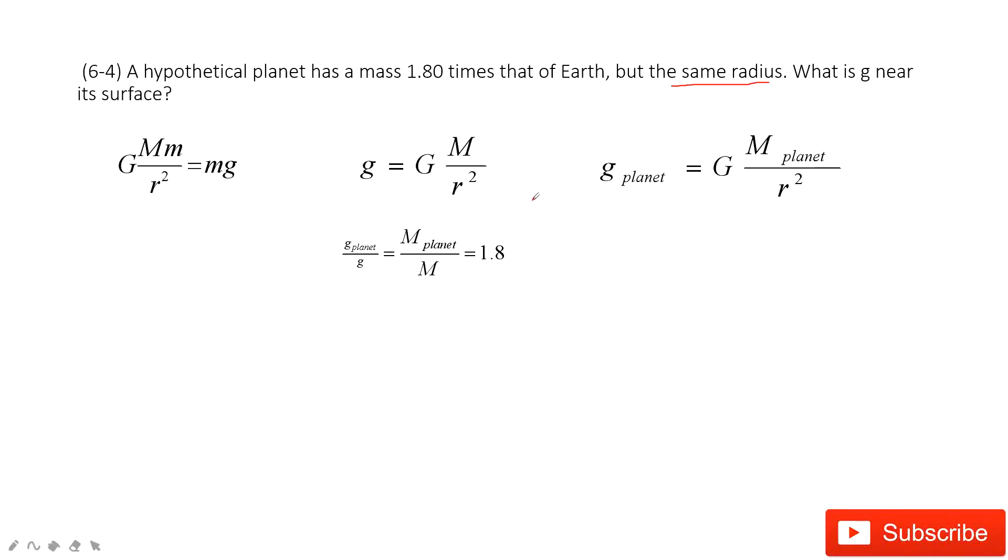Now we can get the ratio. The g planet divided by g equals the M planet, the mass of planet divided by mass of Earth. This one tells you 1.8.